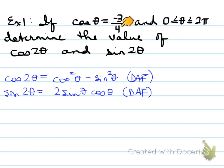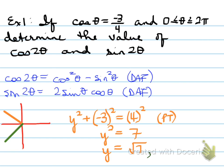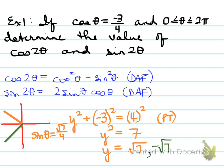Cos θ equaling a negative value means θ is in either the second or the third quadrant. In the second quadrant, sine θ is positive. In the third quadrant, sine θ is negative. So we find the y-value using the Pythagorean theorem. We find that y equals root 7 in the positive direction for quadrant 2, and negative root 7 for quadrant 3. So sine θ equals root 7 over 4 in quadrant 2, and negative root 7 over 4 in quadrant 3.